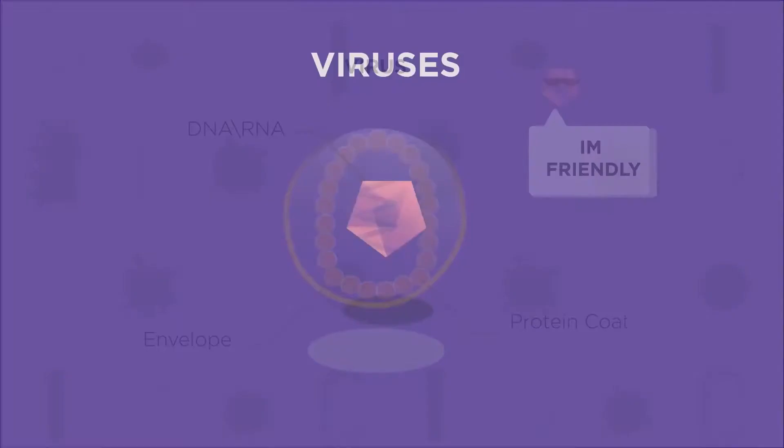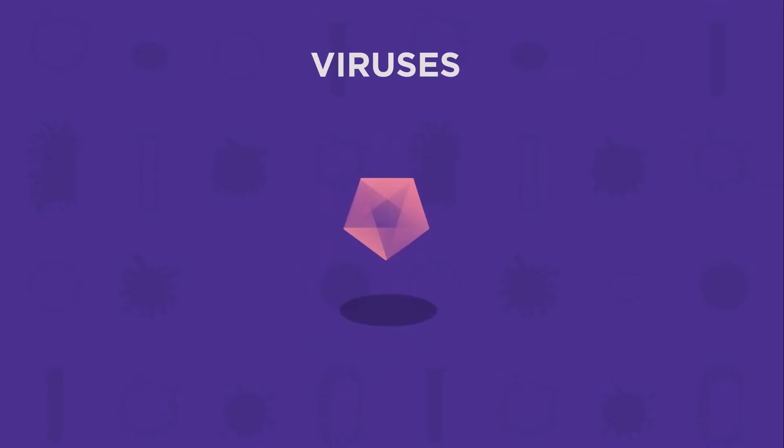As we just saw, viruses aren't made up of cells. In fact, they aren't really living. They are halfway between a living organism and a chemical. Because they aren't living, we say there are different types of virus rather than saying different species of virus.